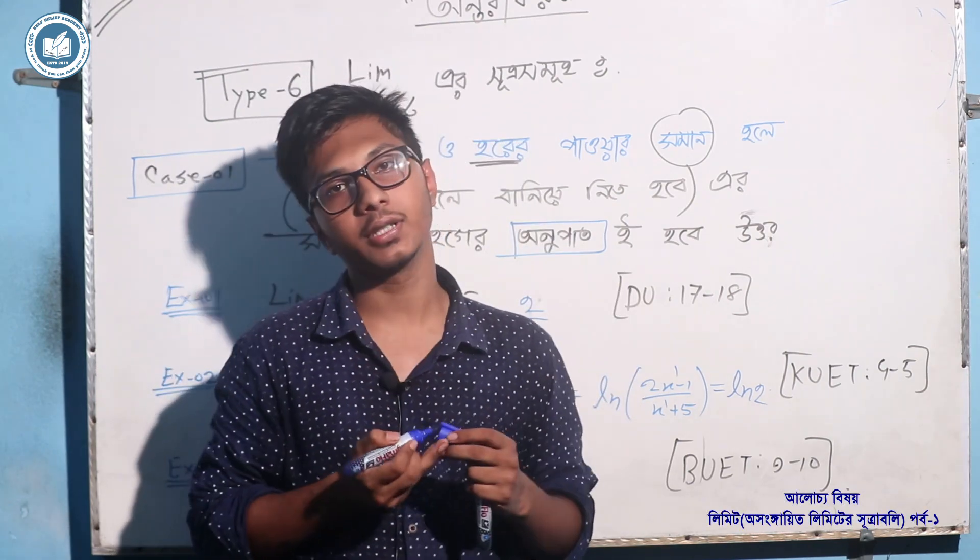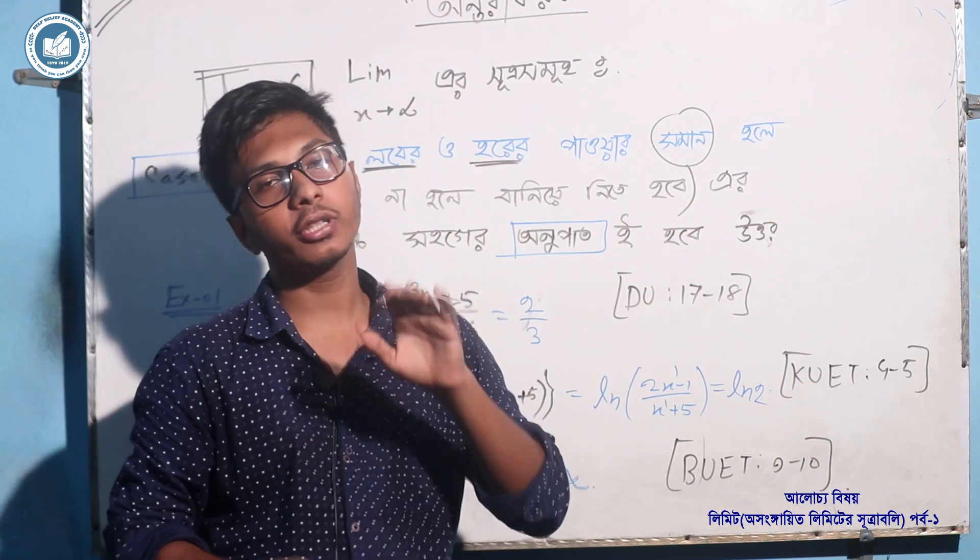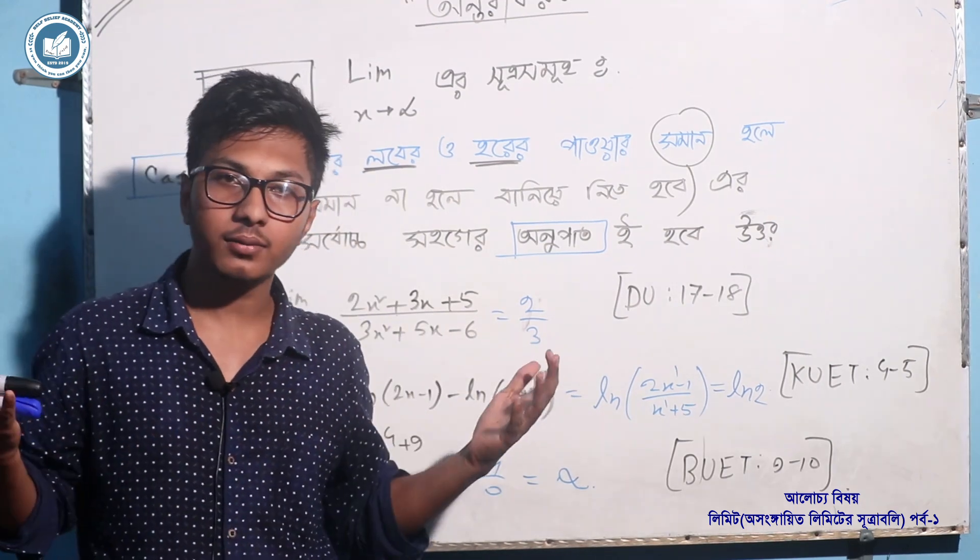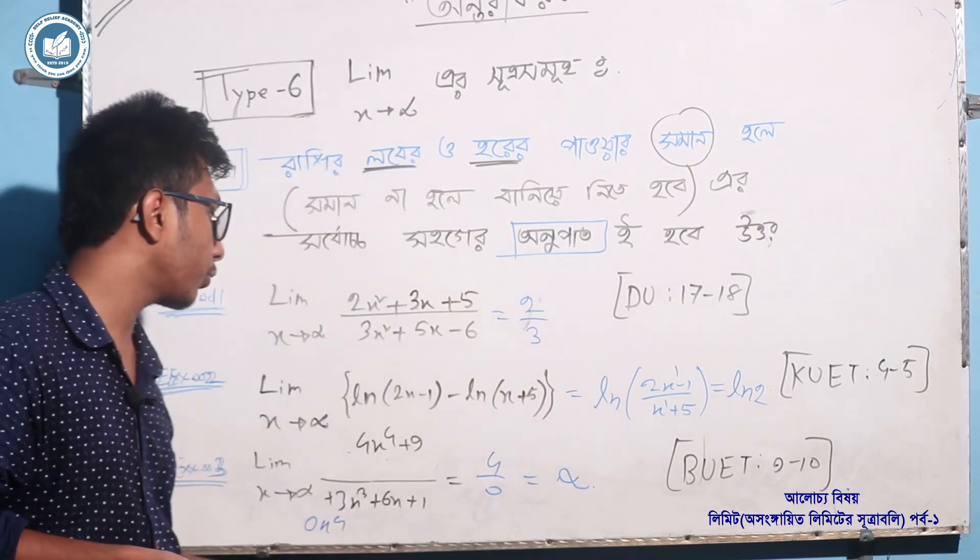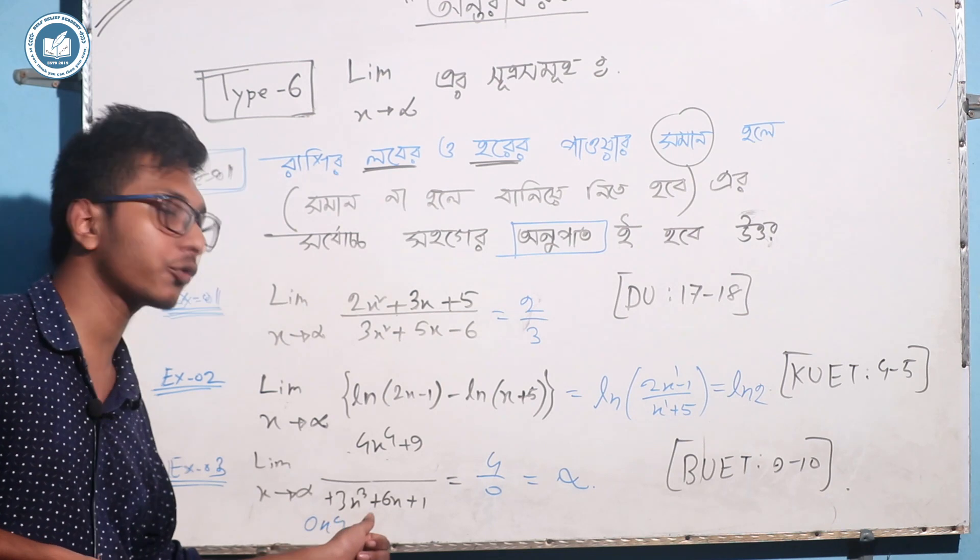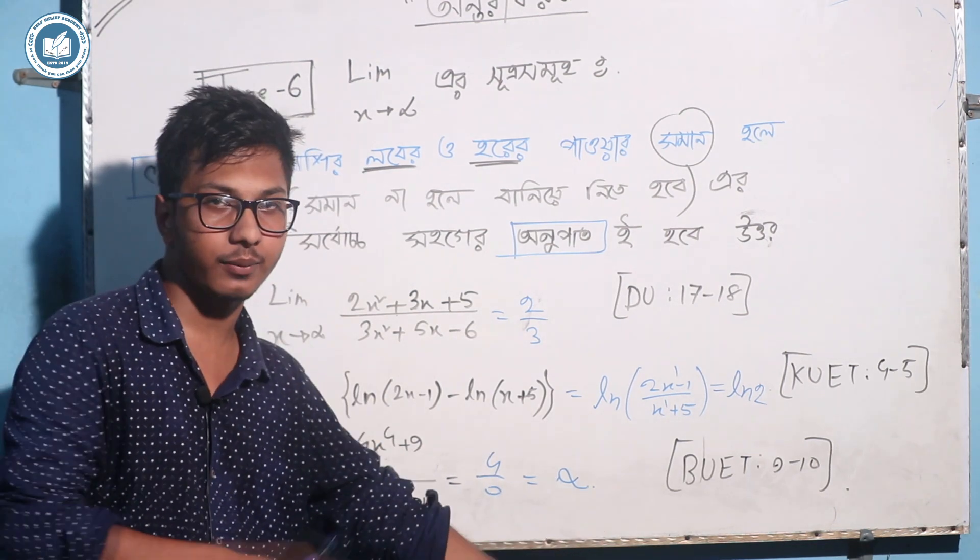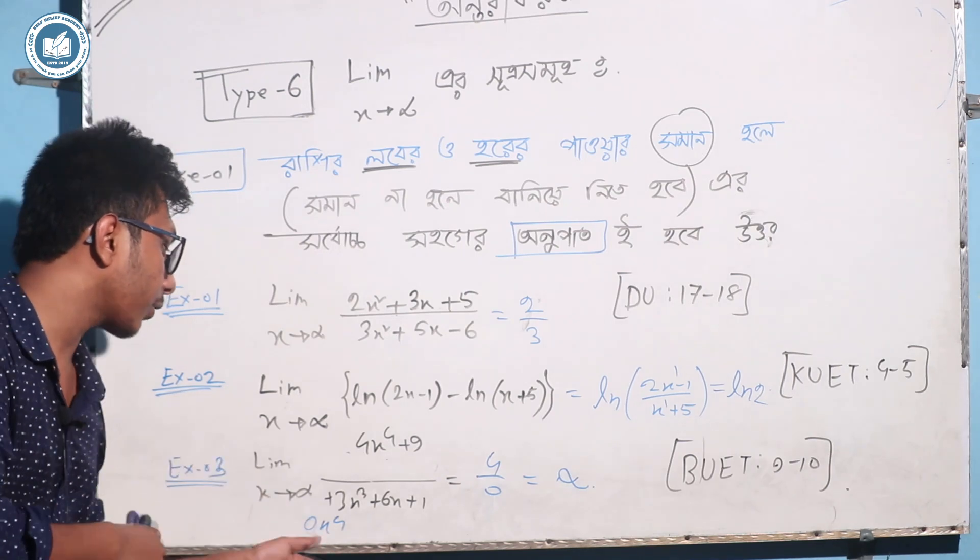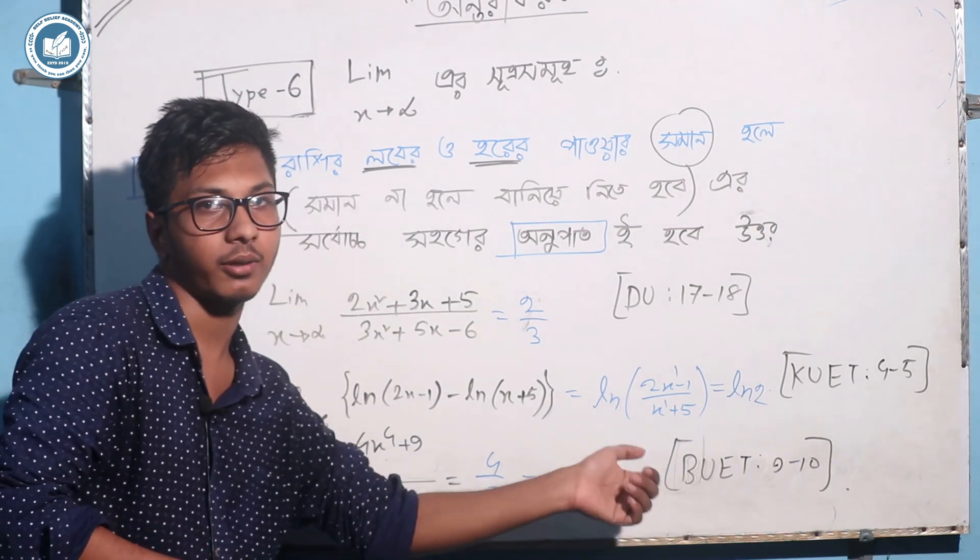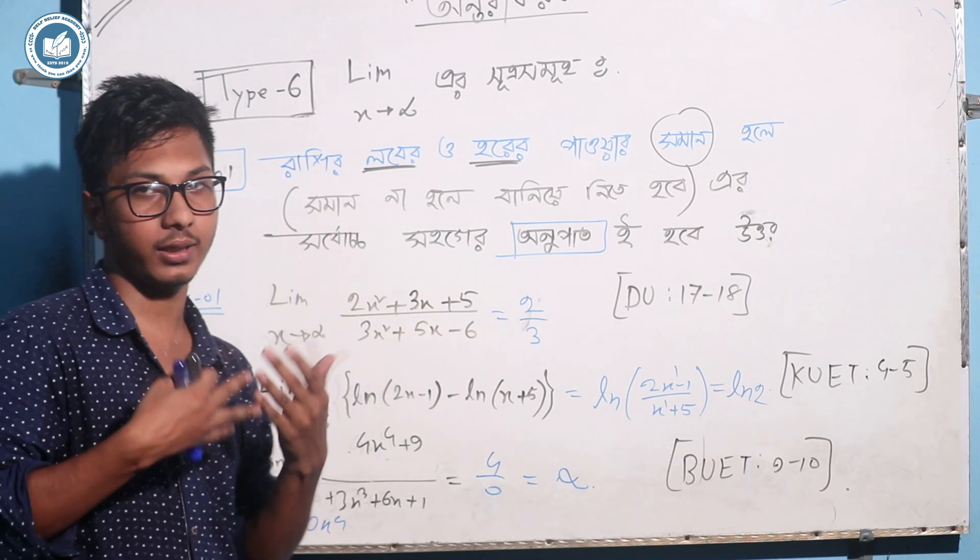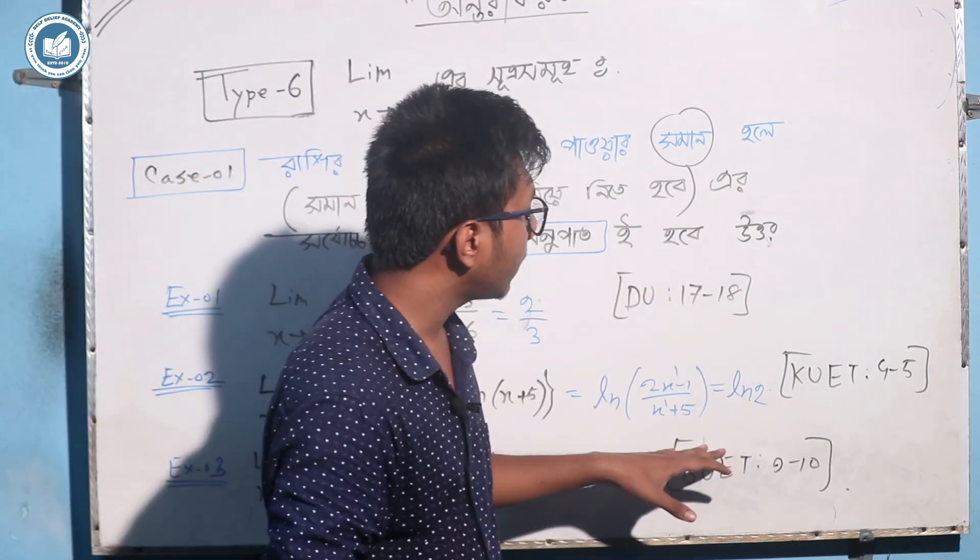We have short tricks. The short trick is that if the upper power is greater, then we have to write infinity. If you see the upper power is greater, then you have to write infinity. If you have to clear it, if the lower power is greater, then you have to write 0. And if the upper power is greater, then you write infinity.